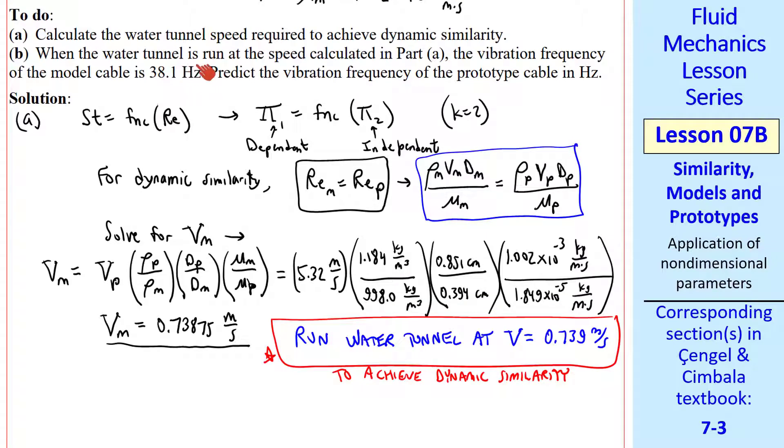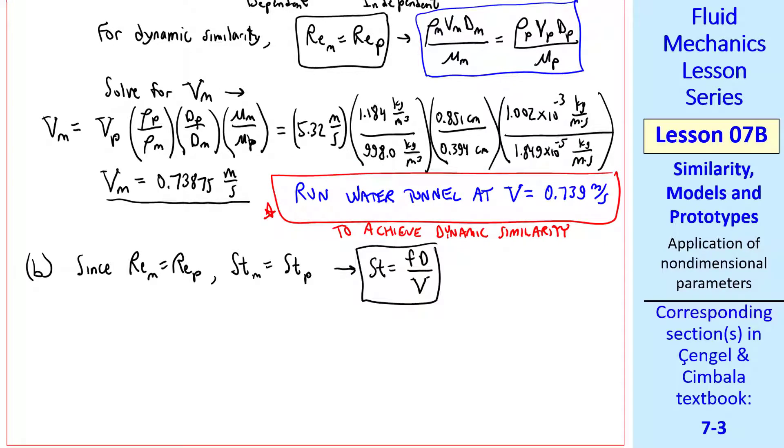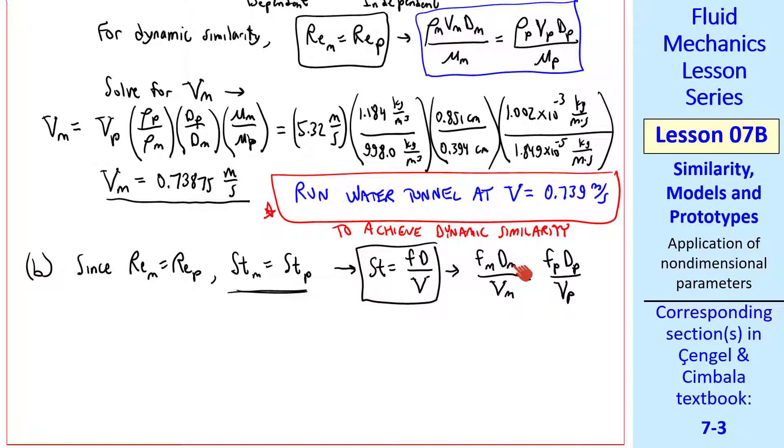Part B says that when the water tunnel is run at the speed calculated in Part A, this speed, the vibration frequency of the model cable is 38.1 hertz. We want to predict the vibration frequency of the prototype, also in hertz. Since rem equal rep, we have dynamic stability. We know that stm equal stp. We look up what Strouhal number is. For a problem like this, Strouhal number is fd over v. So equating model and prototype, we write fm dm over vm equal fp dp over vp.